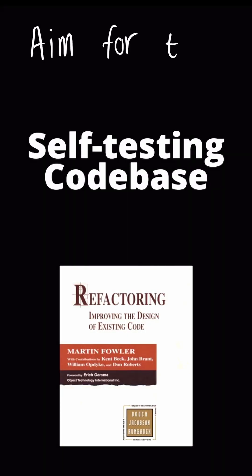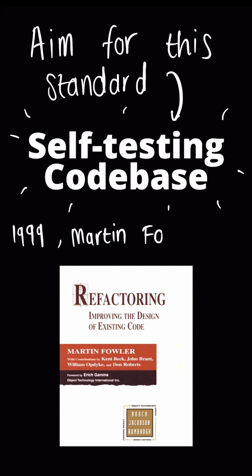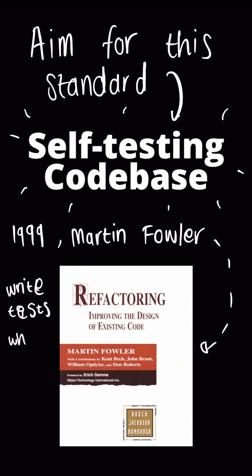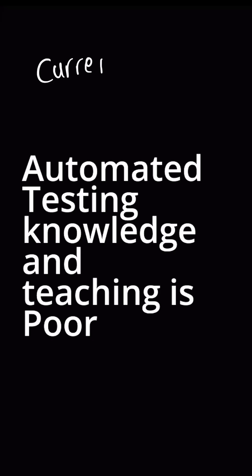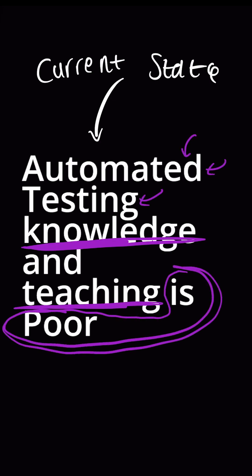There's a standard that you will never be able to reach called a self-testing code base, written about in 1999 by Martin Fowler in the book Refactoring. It is a practice of writing comprehensive automated tests in conjunction with the functional software. As it stands now, the knowledge and teaching of automated testing in our app development community is very poor.